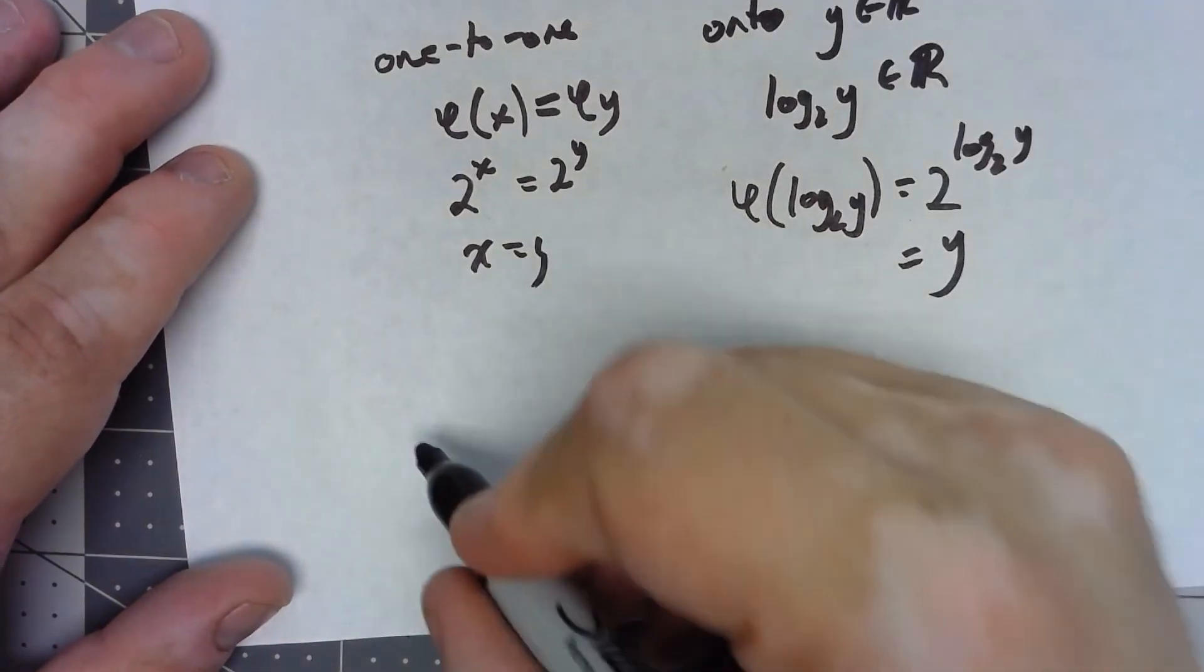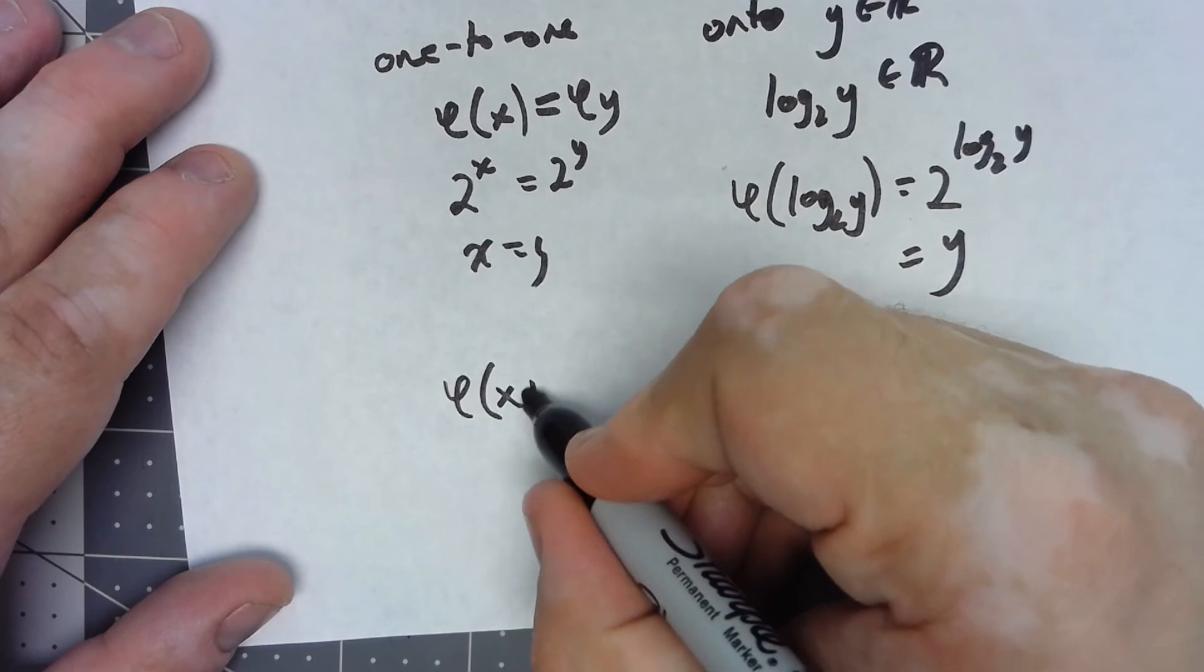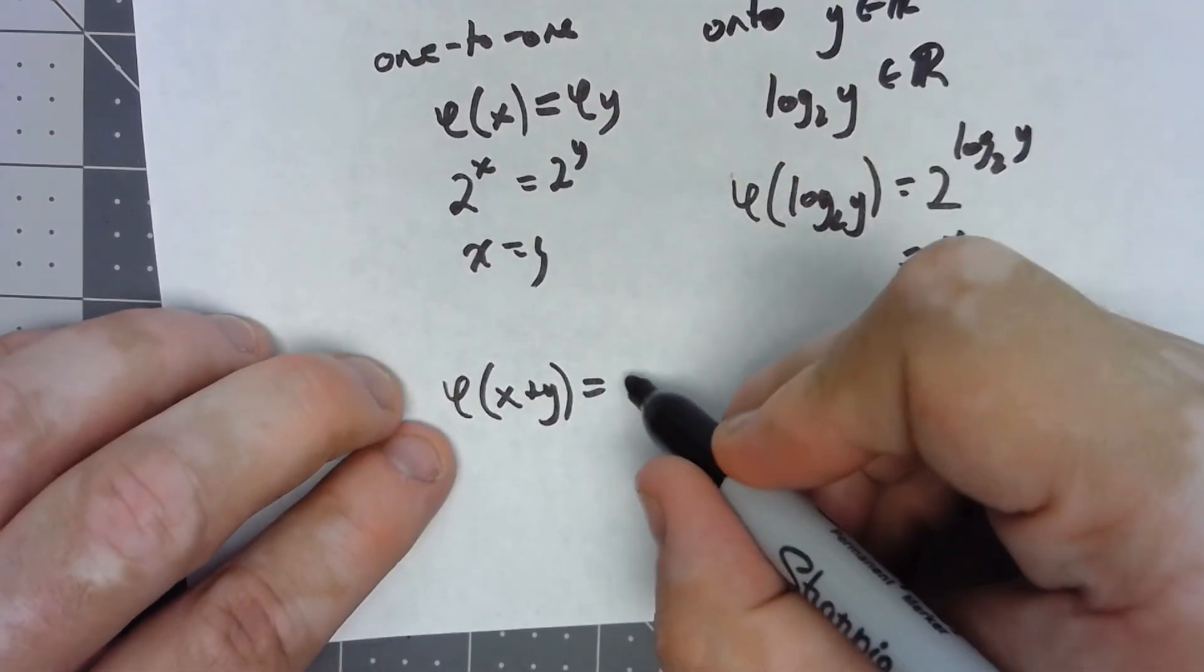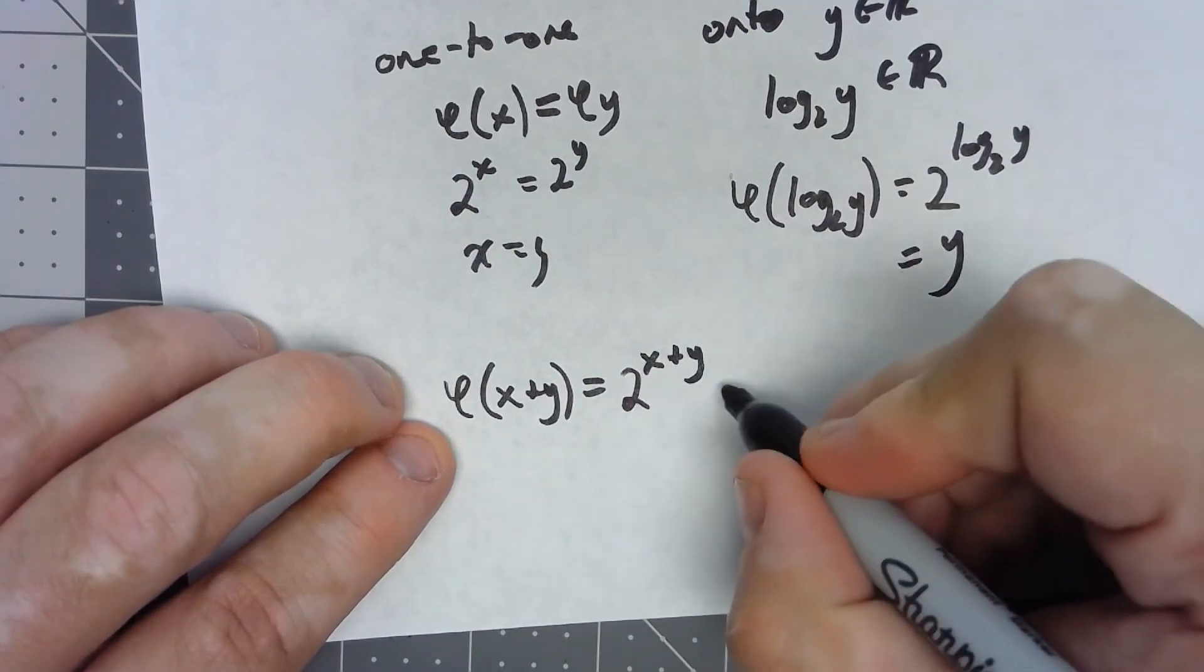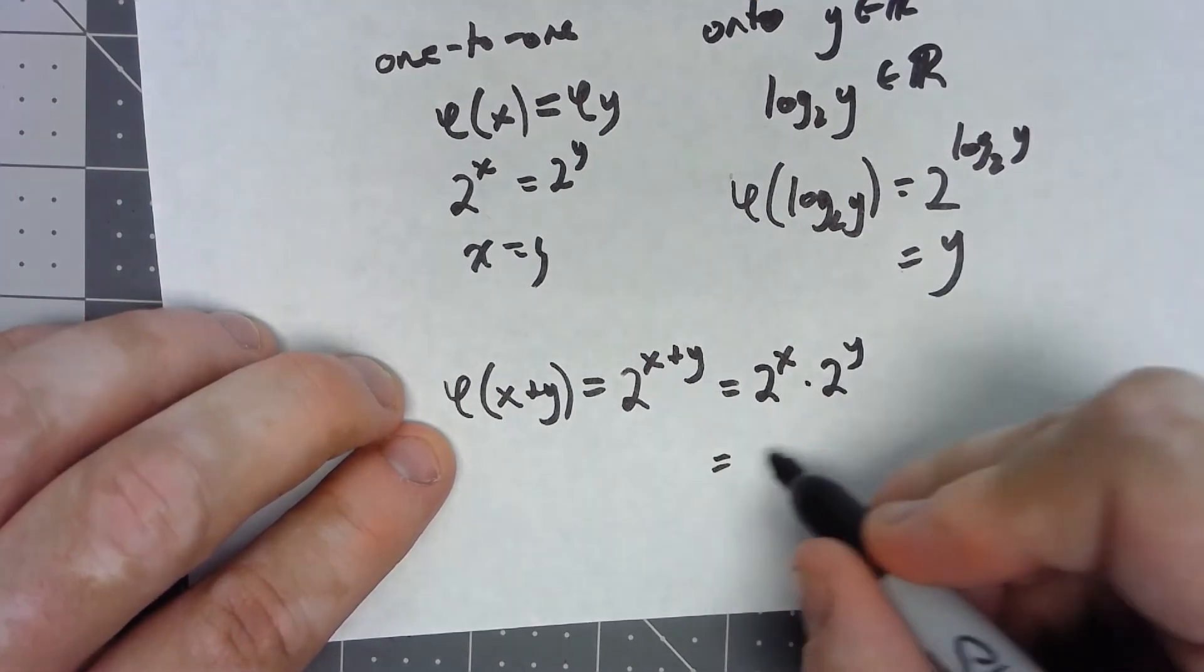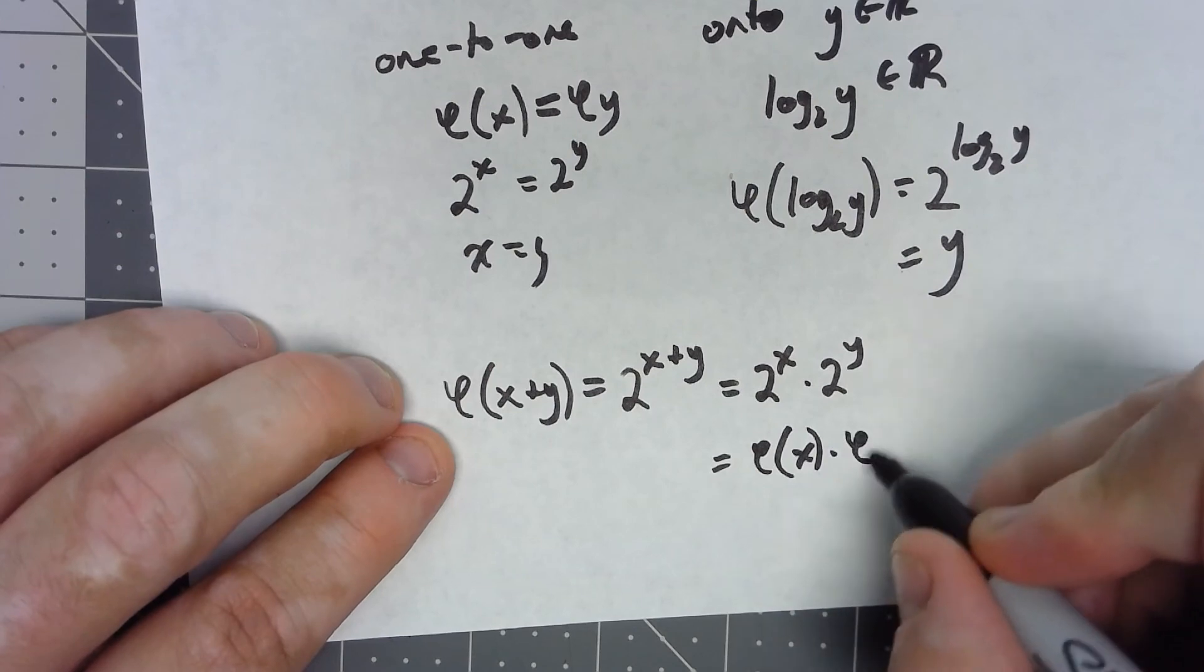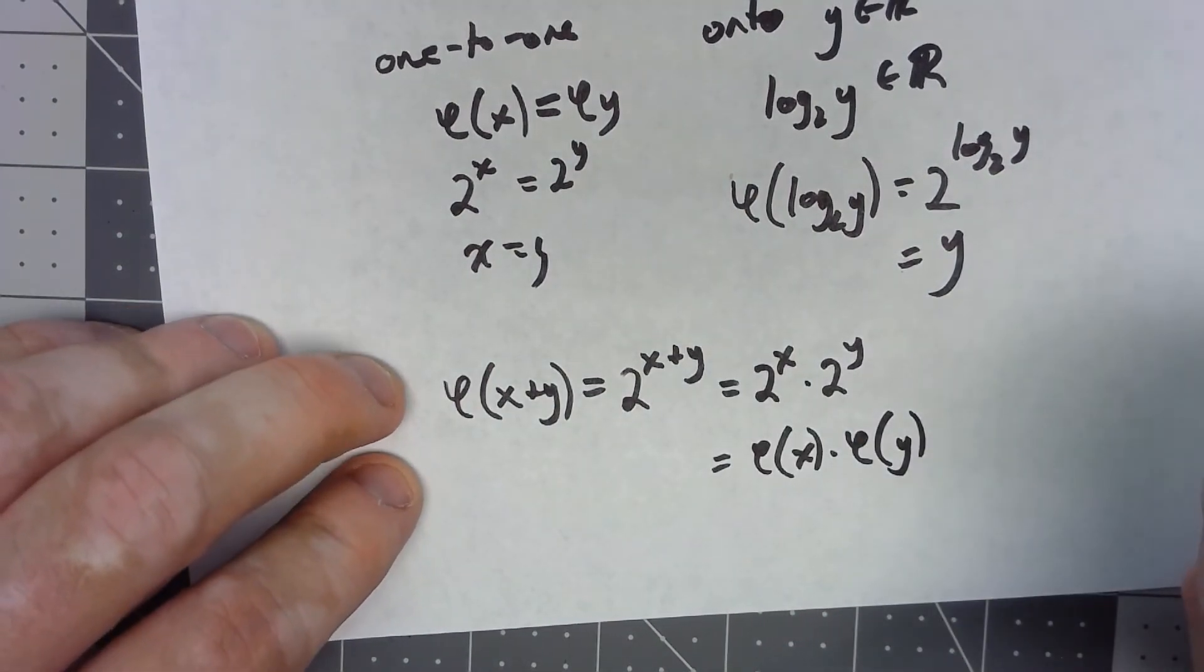And if I do phi of x plus y, that's equal to 2^x times 2^y. That is phi of x times phi of y. And there we go. It's got the homomorphism property.